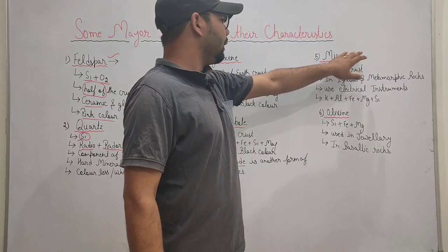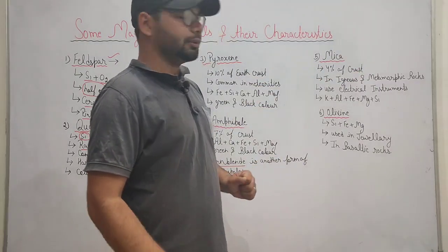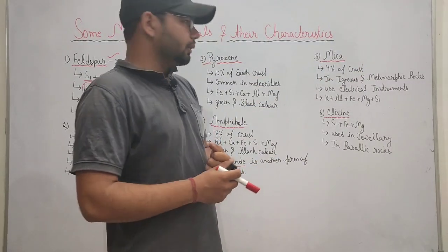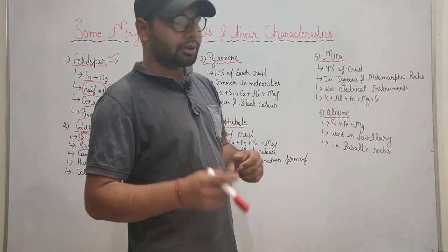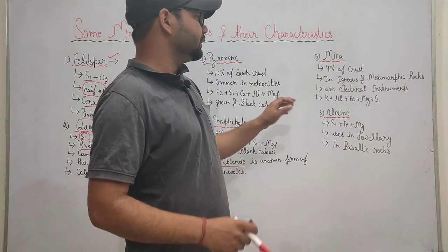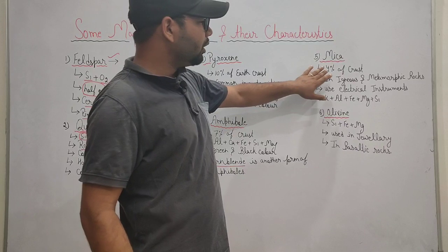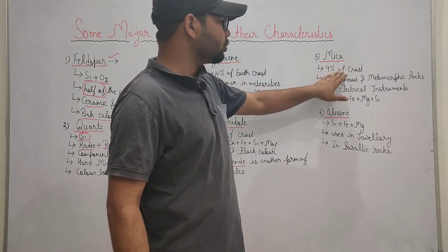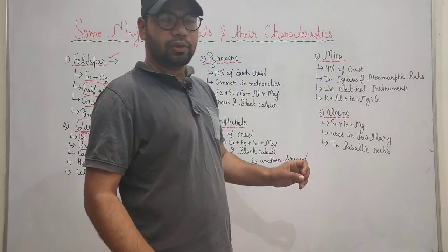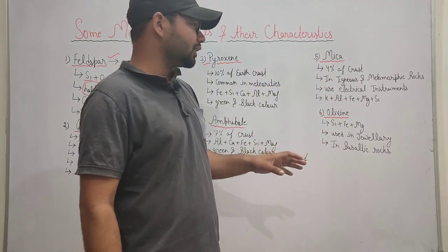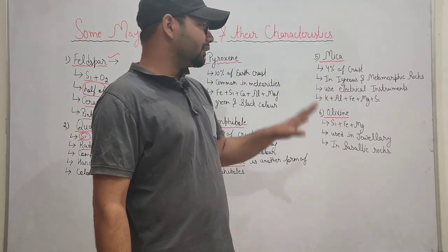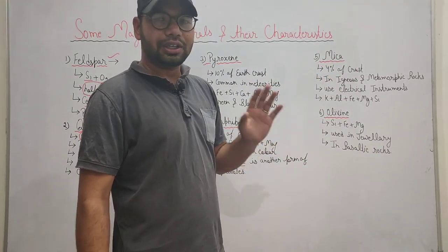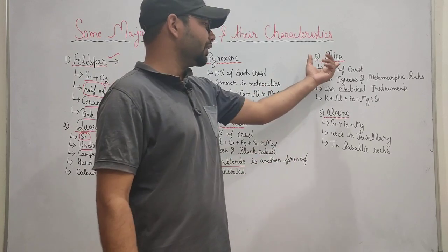Now let's talk about mica. It can be red or black in color, and you can find it in various forms.